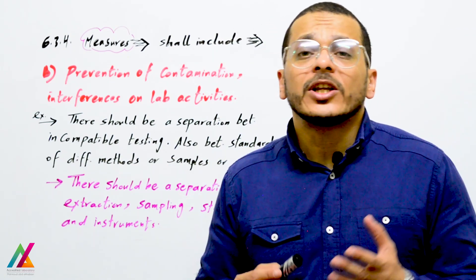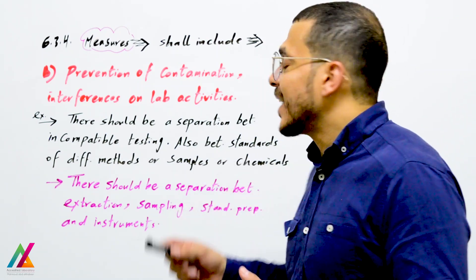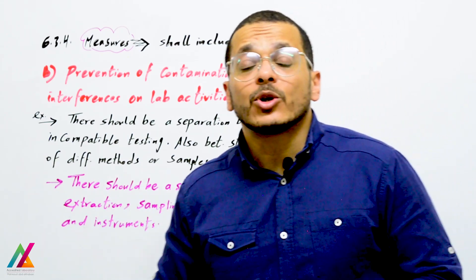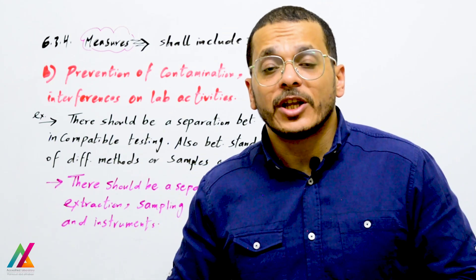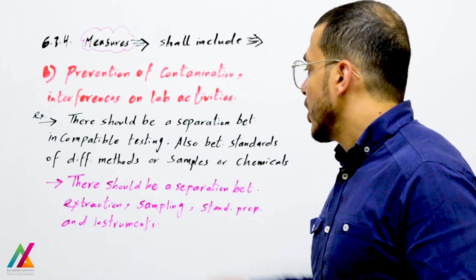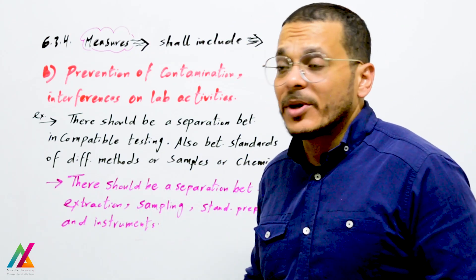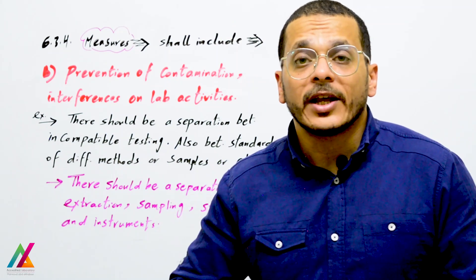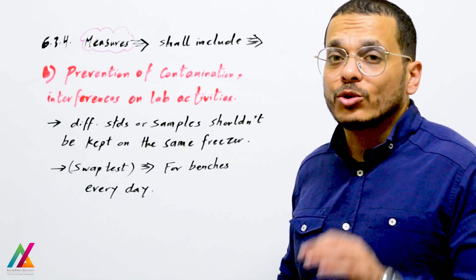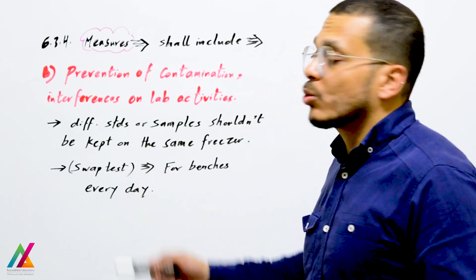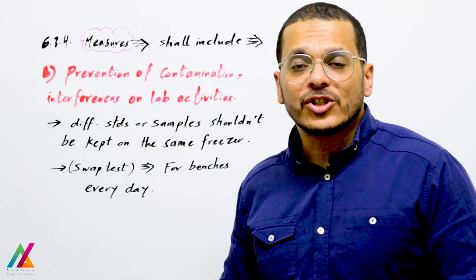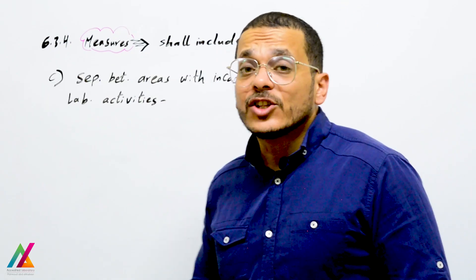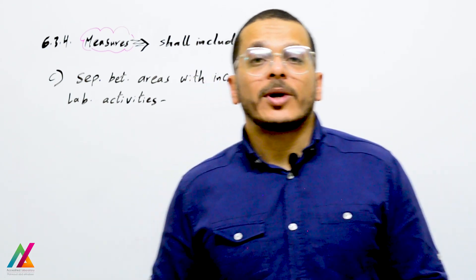Measures shall also include prevention of contamination or interference on lab activities, such as separation between incompatible testing and between standards of different methods, samples, or chemicals in fridges, freezers, or rooms. There should also be separation between extraction, sampling, standard preparation, and instruments. Different standards or samples should not be kept in the same fridge or freezer. In microbiology, swab tests on benches should be performed daily.